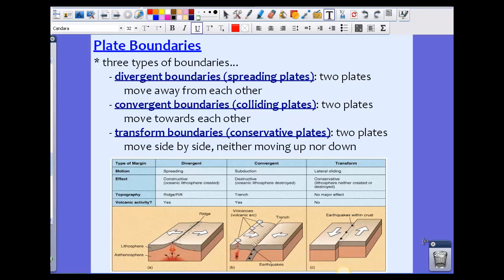We have a third type of boundary called a transform boundary, in your textbook called a conservative plate. This is where two plates are sliding past each other, almost like moving side by side. Neither of them are moving up nor down, they just move sideways.